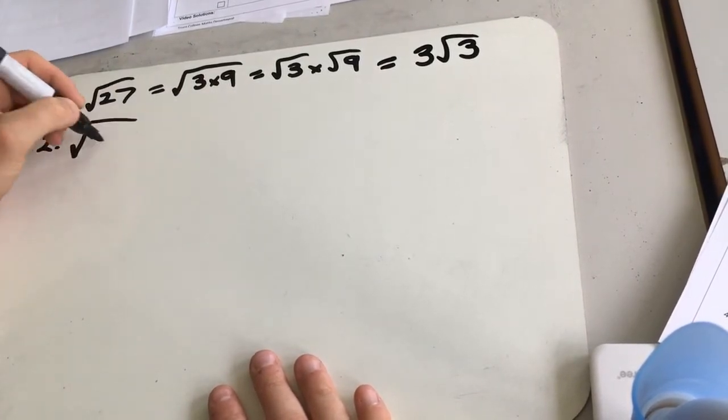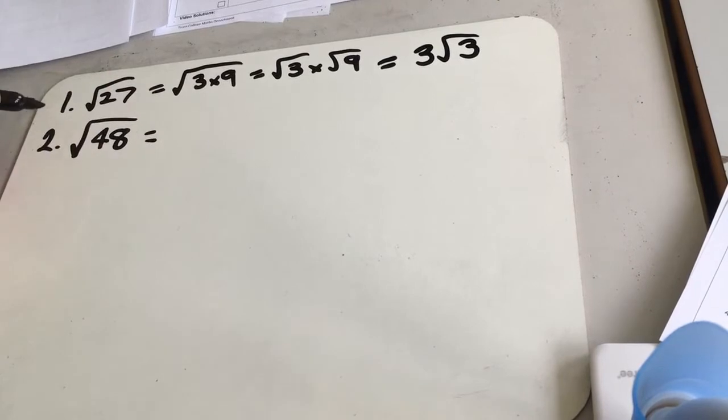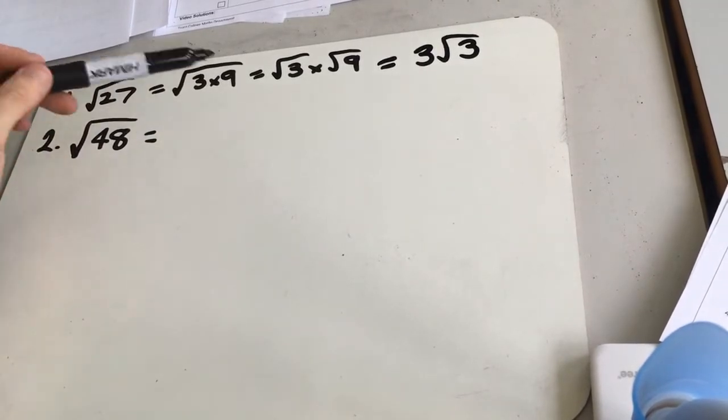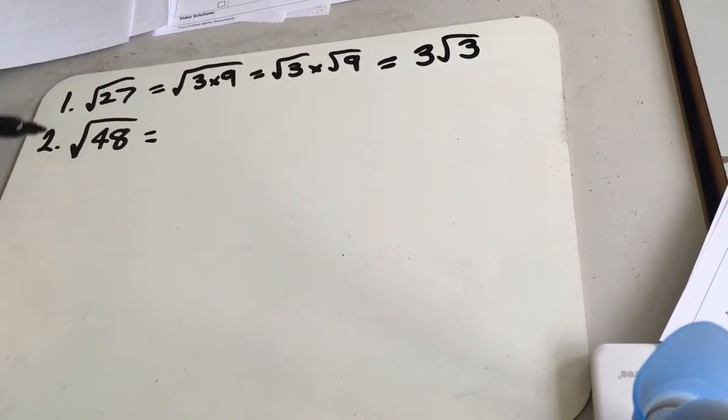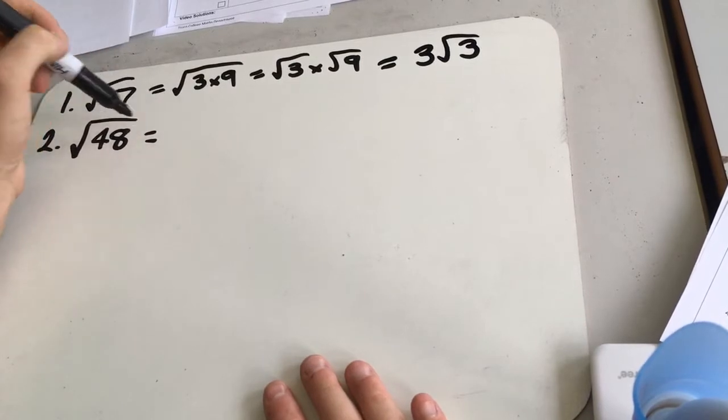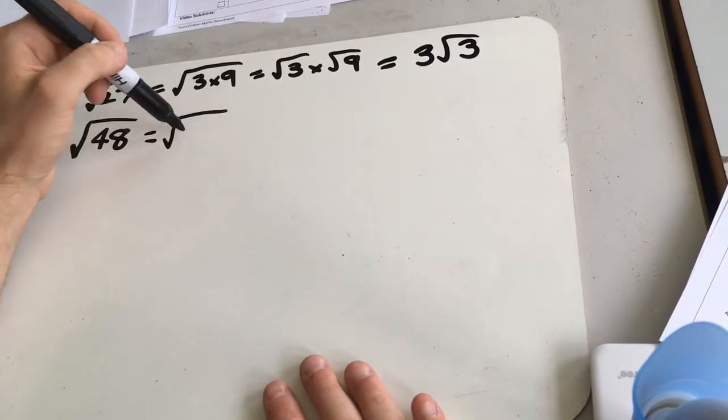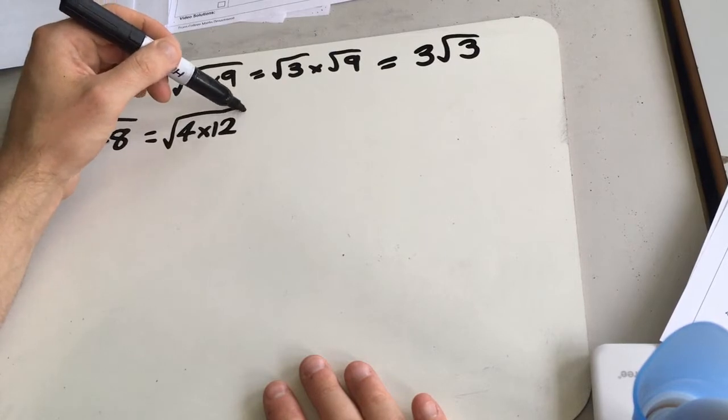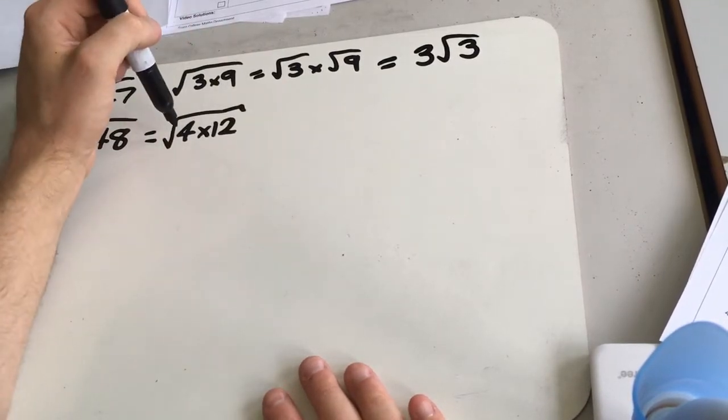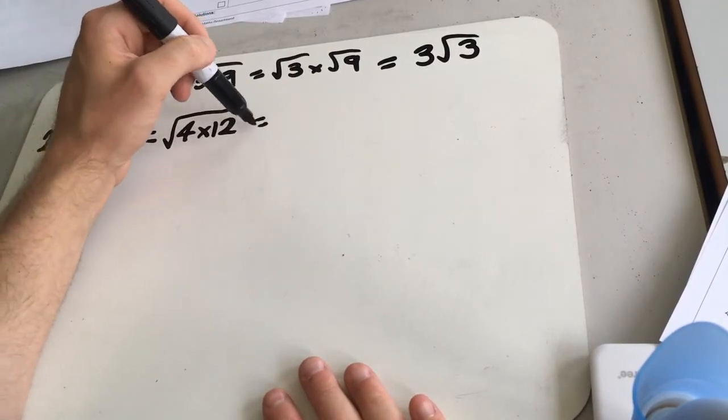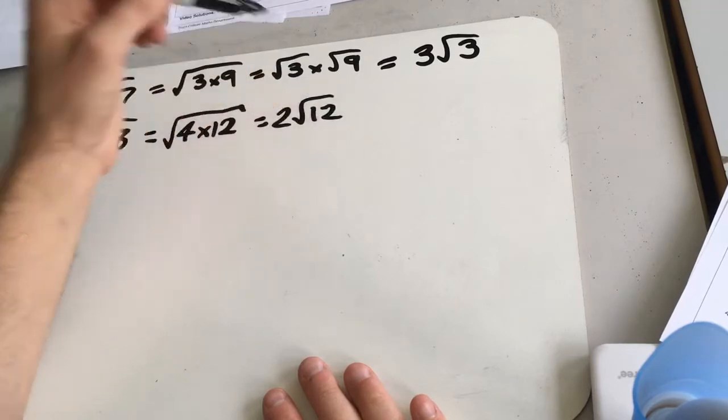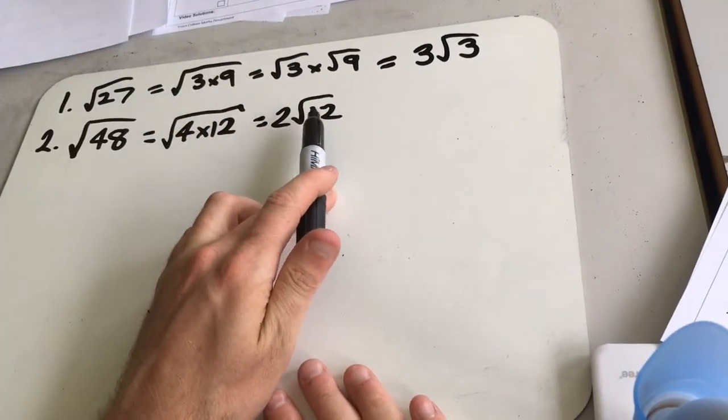Next one, square root of 48. So sometimes you might not spot a prime number and a square number straight away, so we could easily split this one up into 4 times 12. And we know the root of 4 is 2, so we could bring that outside and say it's 2 root 12. But this still isn't simplified enough because 12 isn't prime.